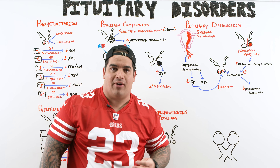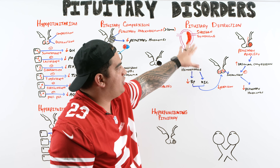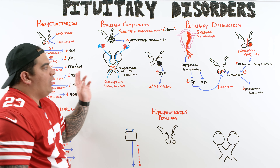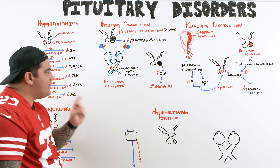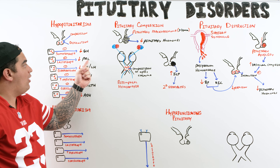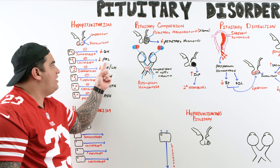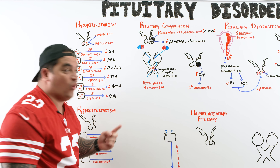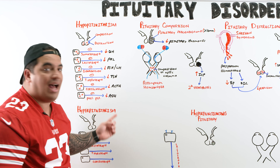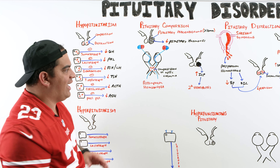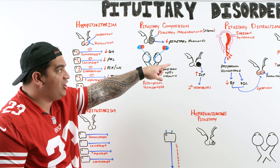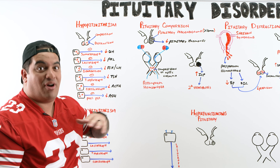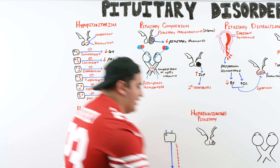Sheehan's syndrome is the easiest to identify by its classic clinical vignette. Also note: if a patient has deficiencies in all pituitary hormones, this is called pan-hypopituitarism. This is not too common overall, but is more frequently seen in Sheehan's syndrome.